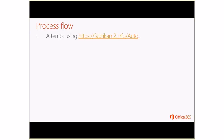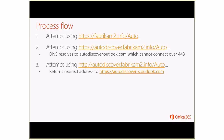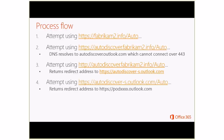The first connection attempt is HTTPS to fabricam2.info — we expect that to fail. The client then attempts HTTPS to autodiscover.fabricam2.info. If our CNAME is configured properly, DNS should resolve to autodiscover.outlook.com, and we should fail that connection on port 443. Then when the client attempts HTTP, we get a redirect to https://autodiscover-s.outlook.com — the dash S is for secure. A request is sent to autodiscover-s.outlook.com, which returns another redirect to one of the pod servers in the service, and then we get our mailbox settings back. So this is a brief overview of AutoDiscover: how it's discovered and the process flow.